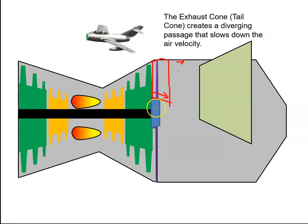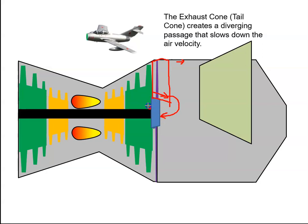The exhaust cone also helps protect against some of the gases getting back into the engine. In this section of the engine there will be a bearing here, and it just helps protect this part of the engine.